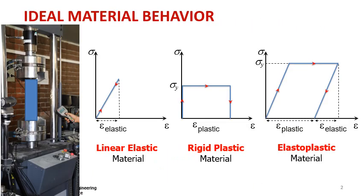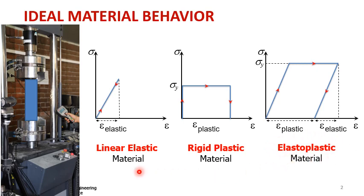In our last video we have seen the tensile testing of a material, and for certain ideal materials, if you were to pull this material in one axis and measure the displacements and corresponding strains, you can see several ideal material behaviors — linear elastic, rigid plastic, and elastoplastic. But what we have not mentioned is the slope for the linear elastic case or the elastoplastic case. What do these slopes mean to us?